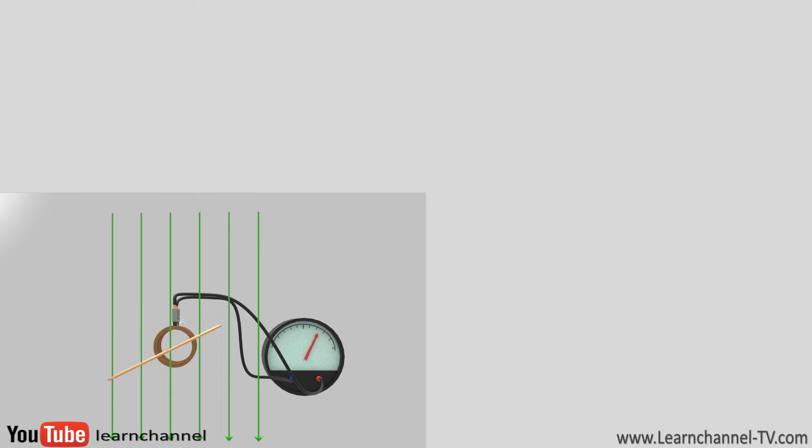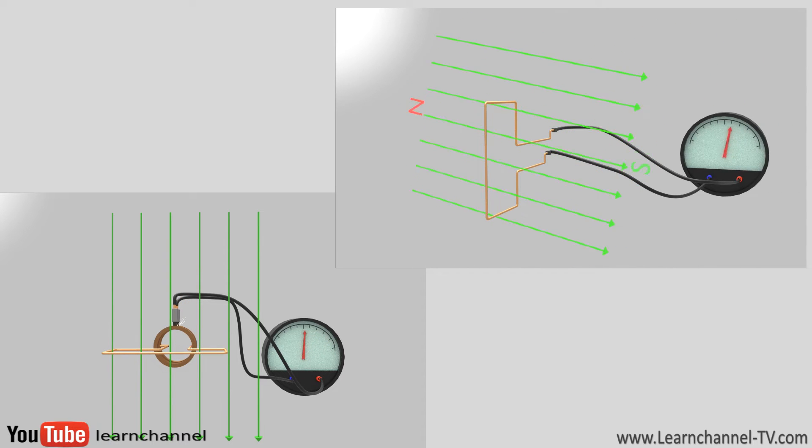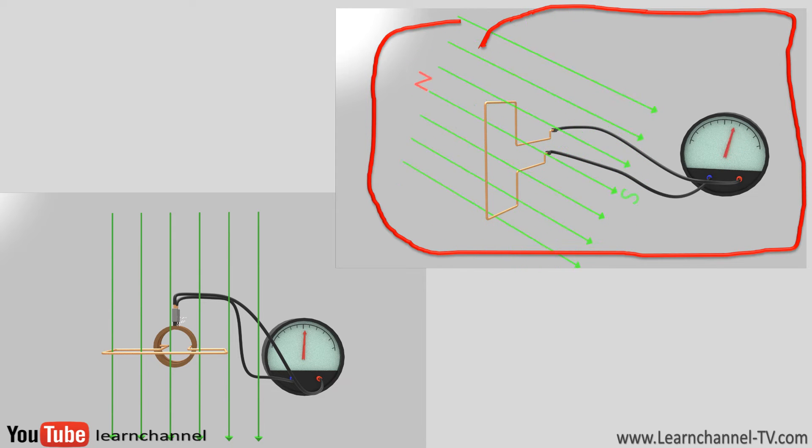The first possibility to get this electromagnetic induction is that a wire rotates within a magnetic field. By the way, the higher the rotational speed of the wire, the higher the voltage and the frequency produced. Or the second possibility, the magnetic field rotates respectively to the wire. Alternators usually work this way.